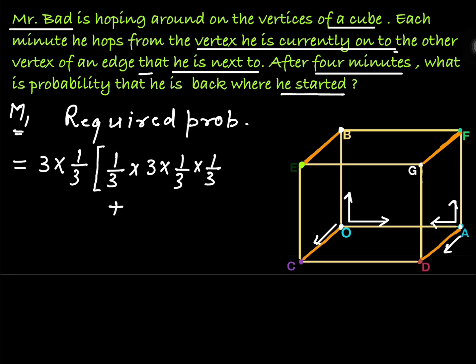Second case, when he is at A and going towards either F or D, he has two options, either F or D. After one step, suppose he is at D. From D, at D, he already consumed two steps and he wants to reach at O after two steps. So at D, he has again two possibilities, two possibilities for third step, either he will go towards A or towards C. So 2/3. Now if he is at A or at C, probability to go back at O is 1/3.